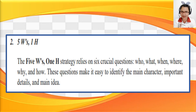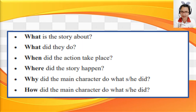Now let's add the second strategy: the 5Ws and 1H. This strategy relies on six crucial questions — who, what, when, where, why, and how — which make it easy to identify the main character, important details, and main idea. Who: the main character. What: what is the story about or what did they do? When: when did the action take place? Where: where did the story happen? Why: why did the main character do what they did? And How: how did the main character do what they did?